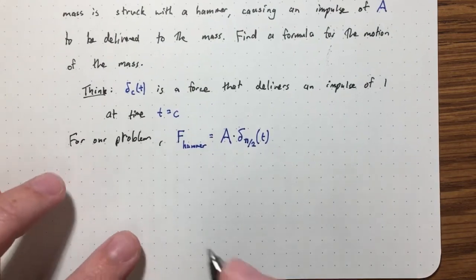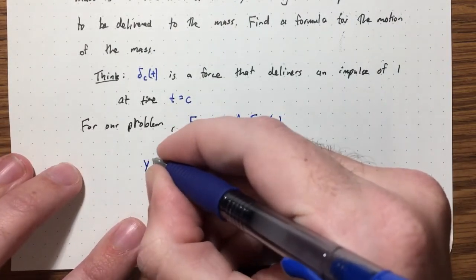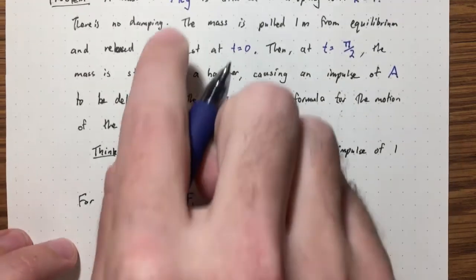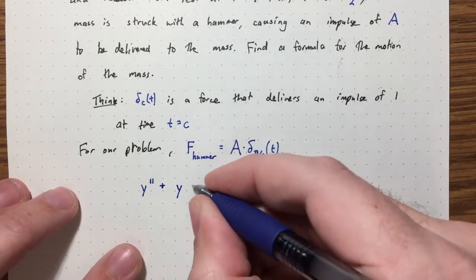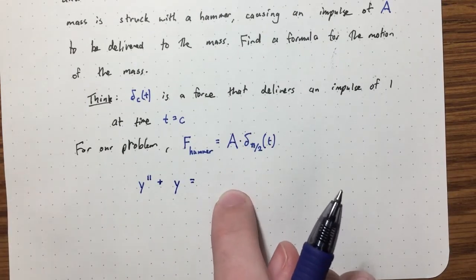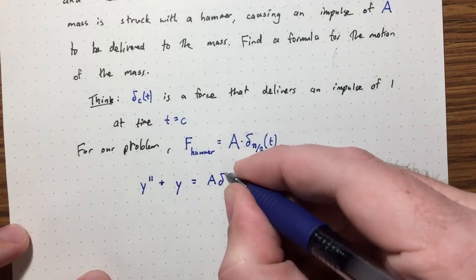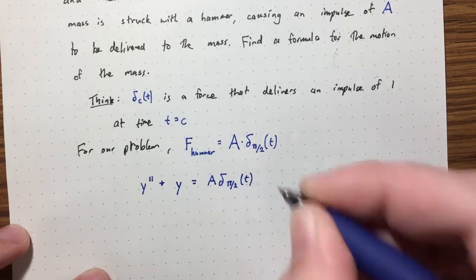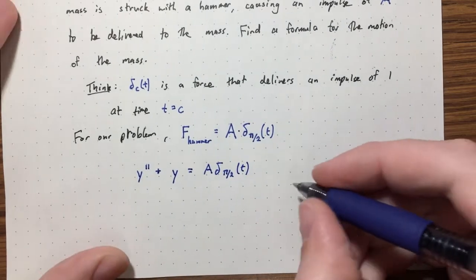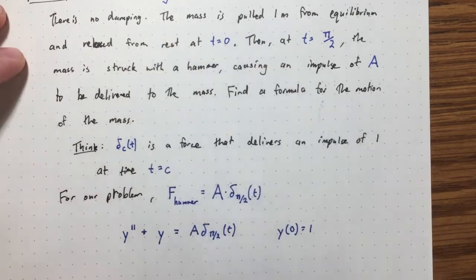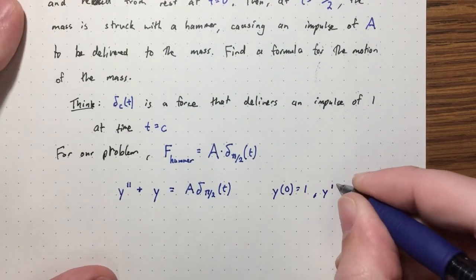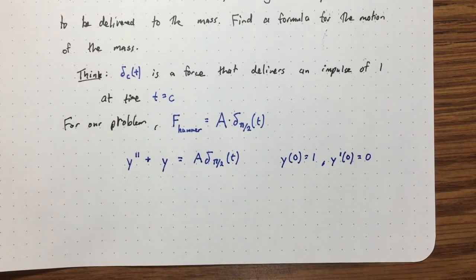The differential equation is y'' + y = A · δ_{π/2}(t), with y(0) = 1 and y'(0) = 0. Let's solve this using the Laplace transform.